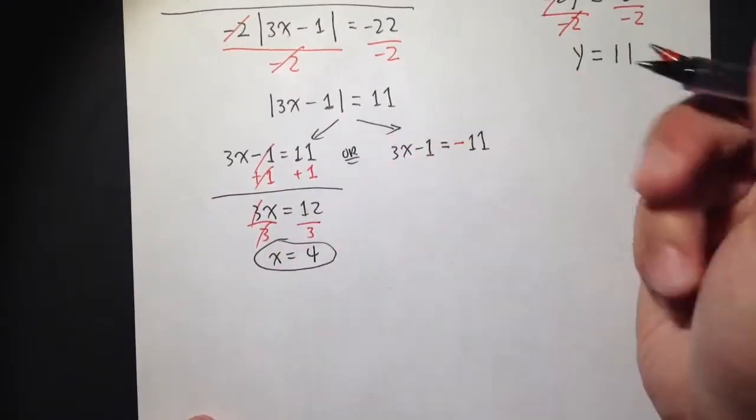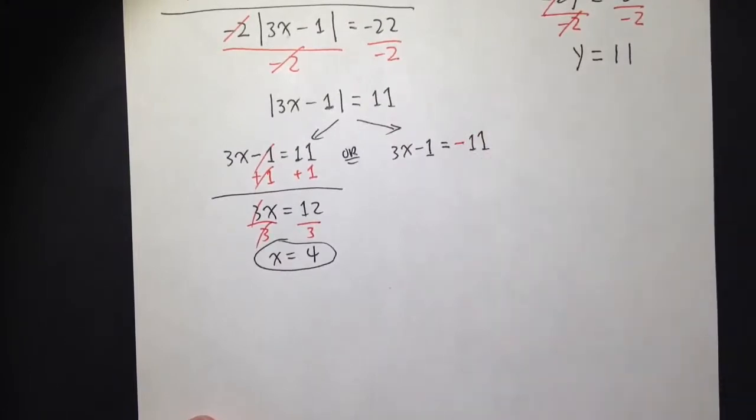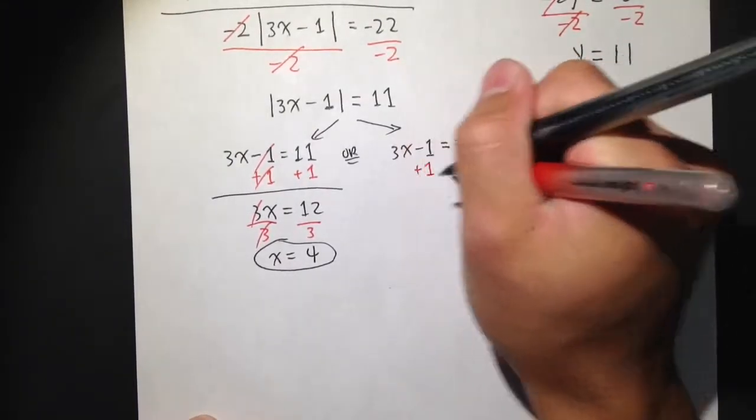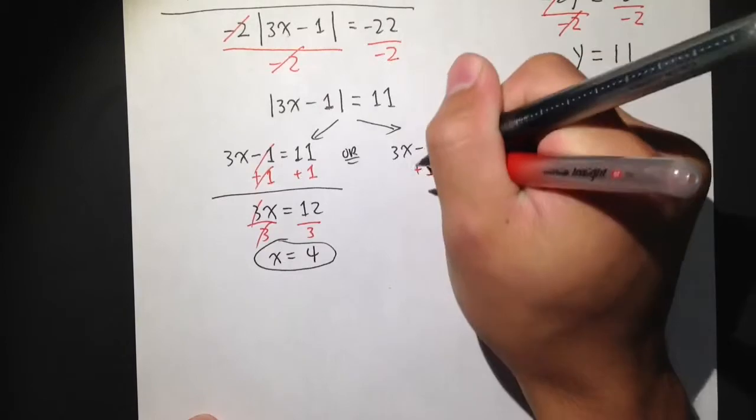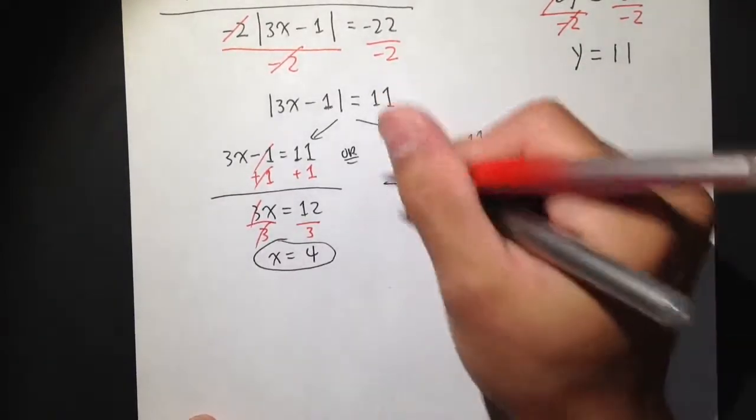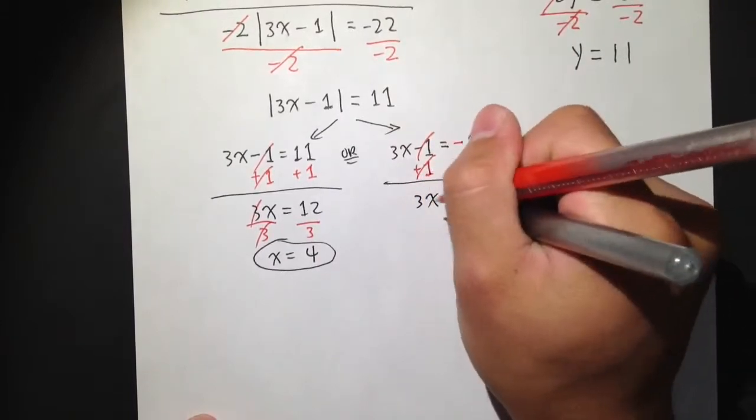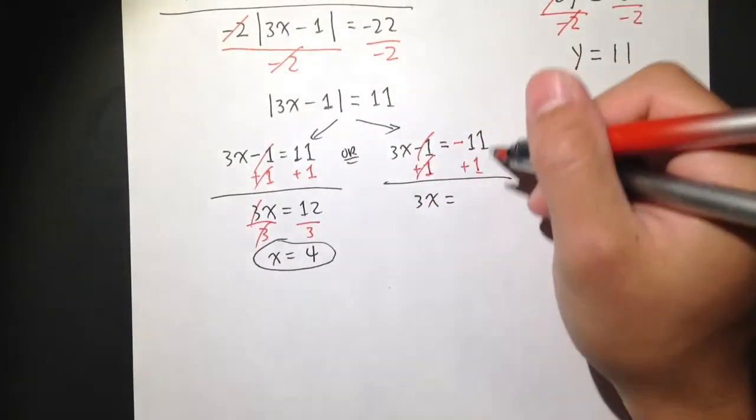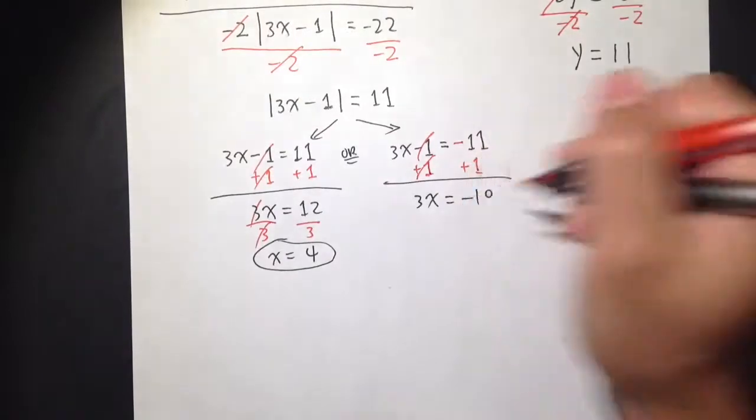For this one, same procedure, but with negative 11 instead. Let's add 1 on both sides. So minus 1 plus 1 cancels. And I get 3x here is equal to negative 11 plus 1, which is negative 10 here.